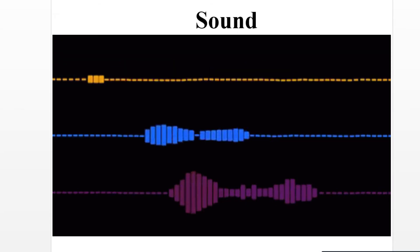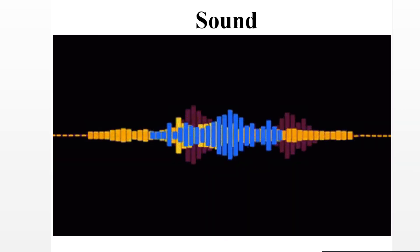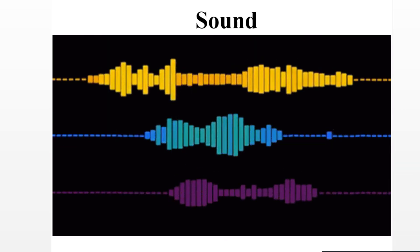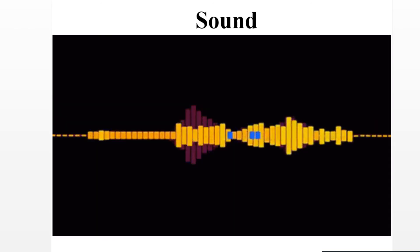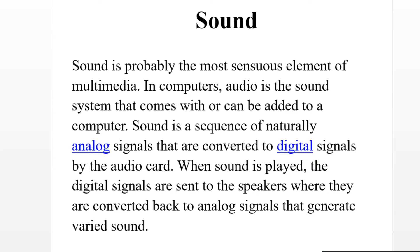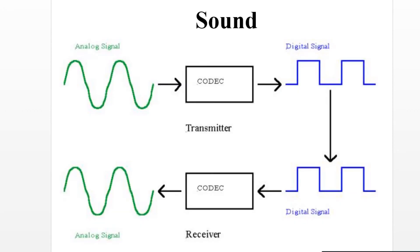Sound is probably the most sensuous element of multimedia. In computers, audio is a sound system that comes with or can be added to a computer. Sound is a sequence of natural analog signals that are converted to digital signals by the audio card. When sound is played, the digital signals are sent to the speakers where they are converted back to analog signals.